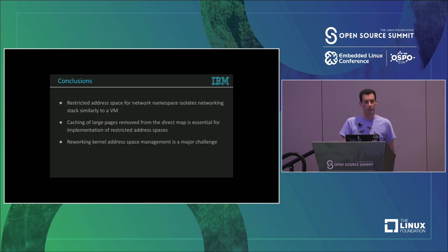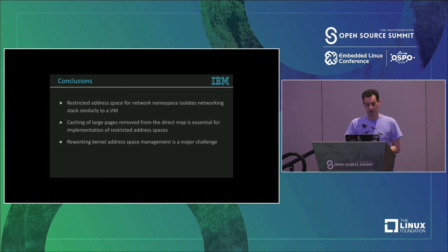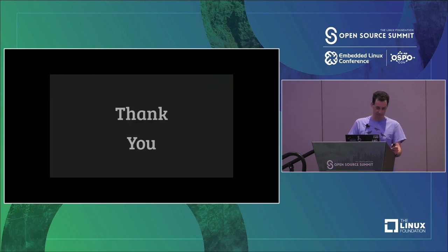To conclude: restricted address spaces for network namespaces create isolation of the networking stack similar to what virtual machines have, and it is better in terms of performance. Caching of large pages removed from the direct map is essential for any security features that use memory management for security — it's important to have this, otherwise we'll see performance degradation across the entire system. And reworking kernel address space management is a major challenge — probably not as major as real-time Linux, and we hope it will take less than 20 years to achieve.